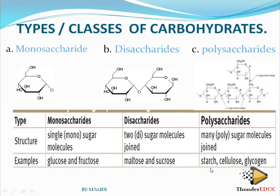Maltose is made up of two glucose molecules, while sucrose is made up of one glucose molecule and one fructose molecule — so there are two monosaccharides combined. Starch is made up of many glucose molecules, and cellulose is also made up of many glucose molecules but arranged in a different form.